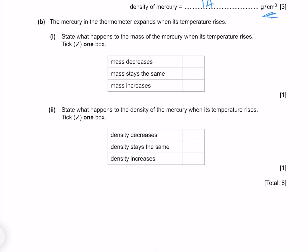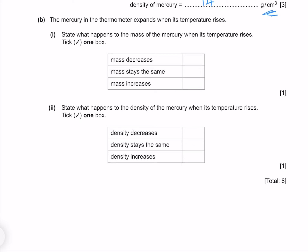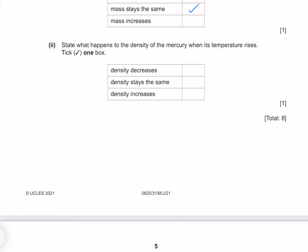The mercury in the thermometer expands when its temperature rises. State what happens to the mass of the mercury when its temperature rises. The mass stays the same. State what happens to the density of the mercury when its temperature rises. Recalling that our density is our mass per volume, our mass stays the same, but if the temperature rises our volume is going to increase. If our volume increases then our density is going to decrease.